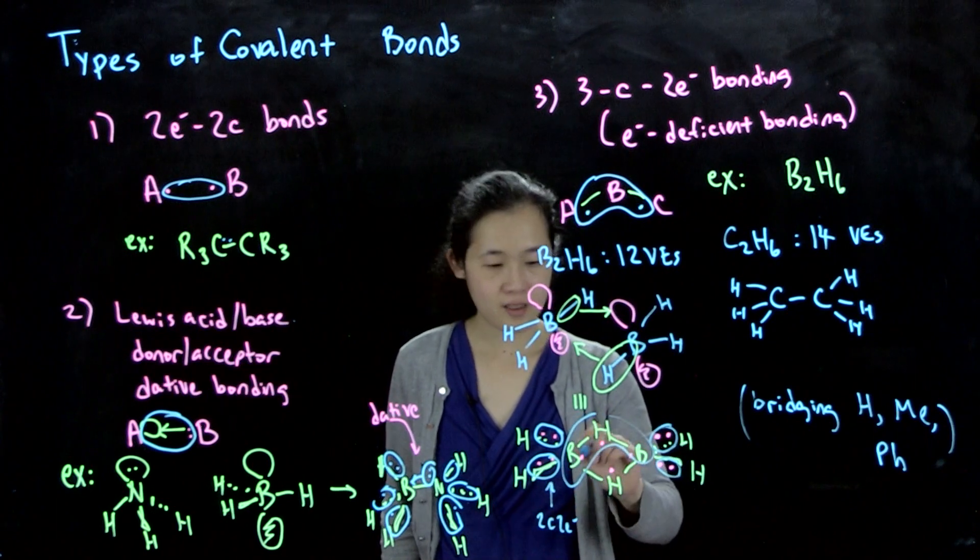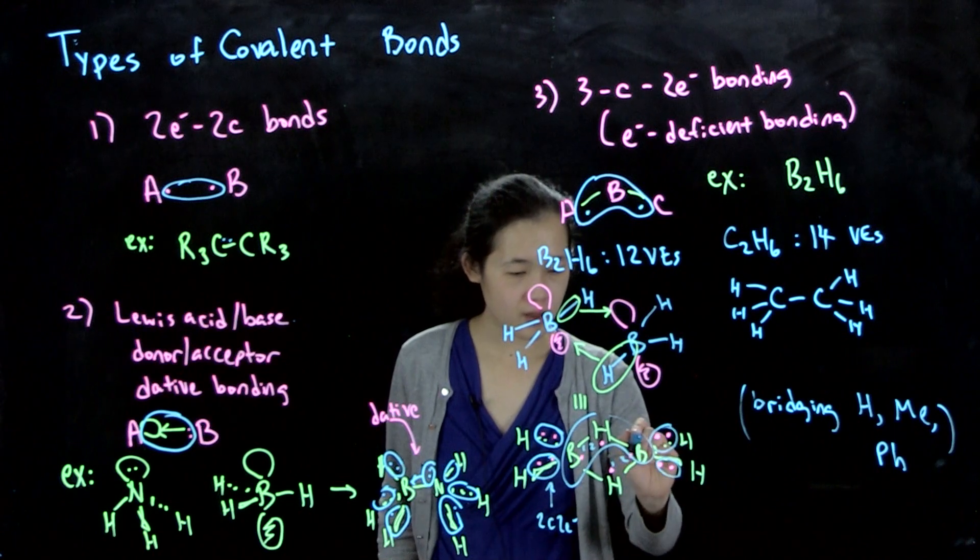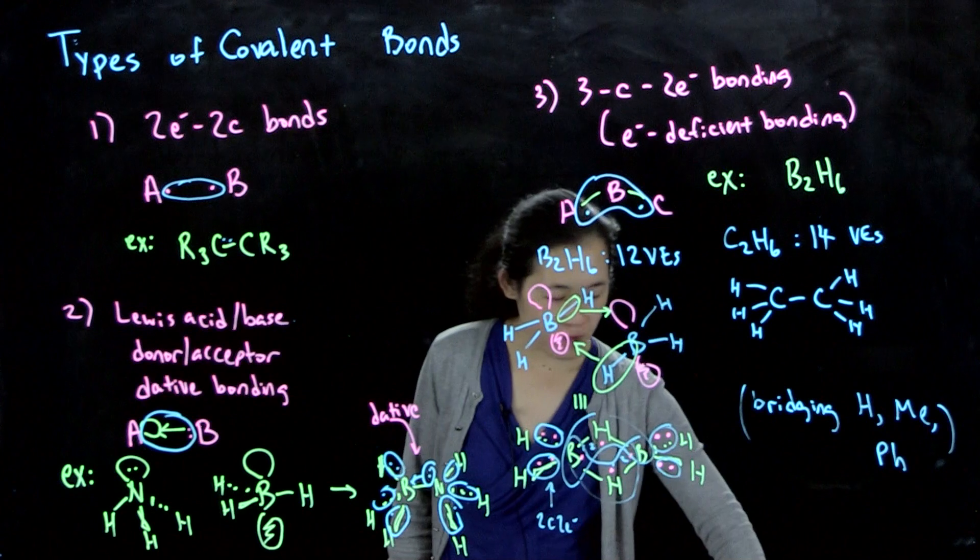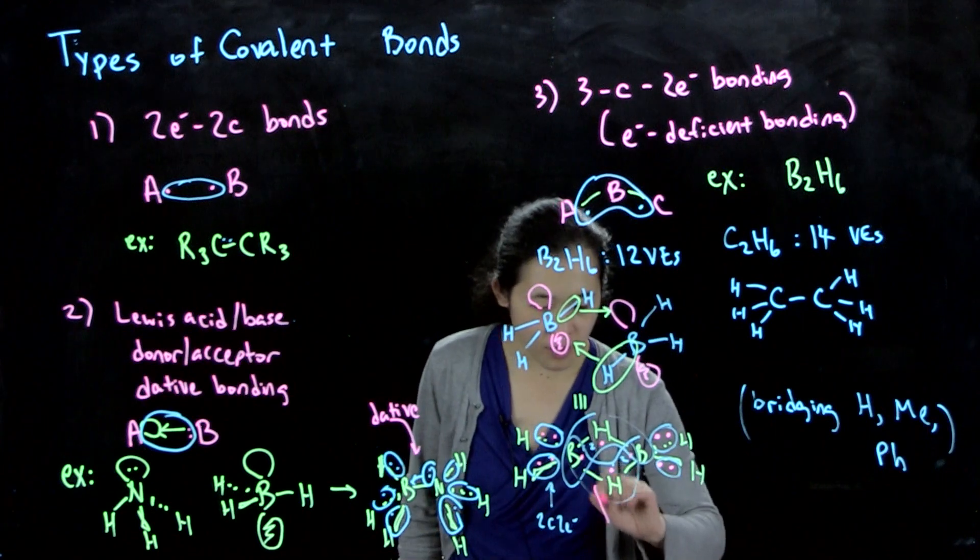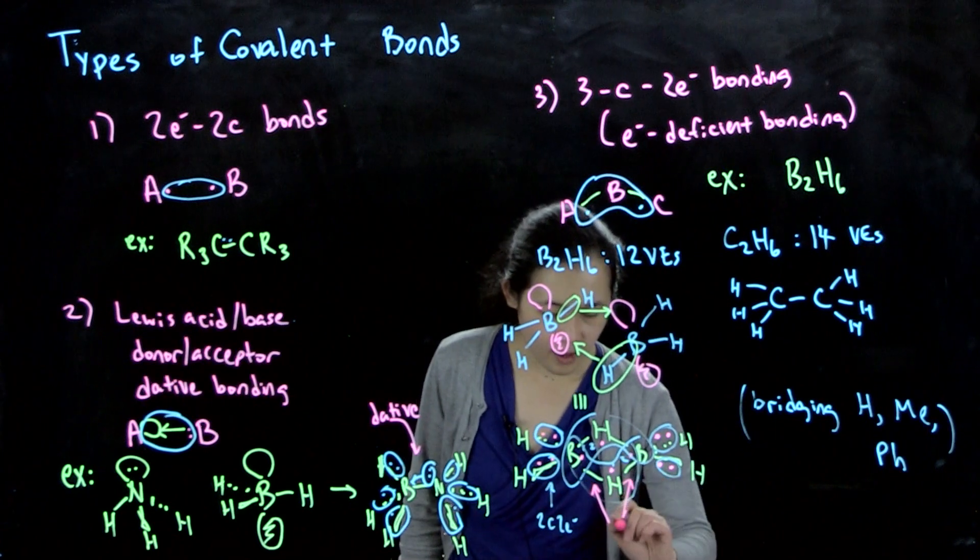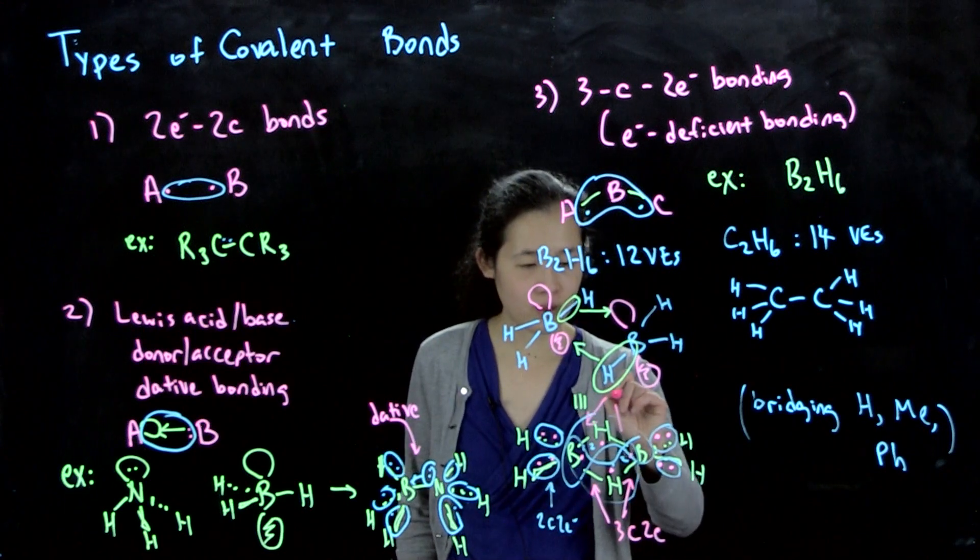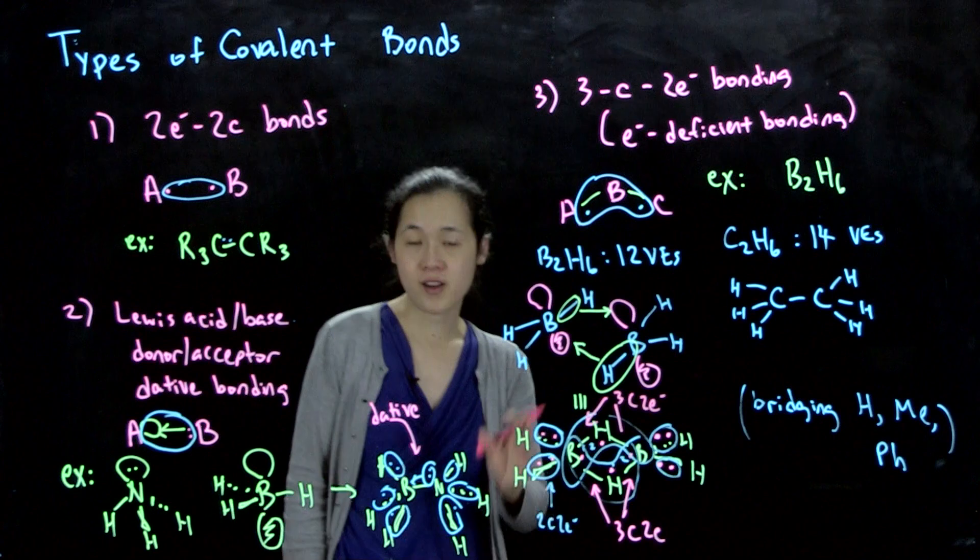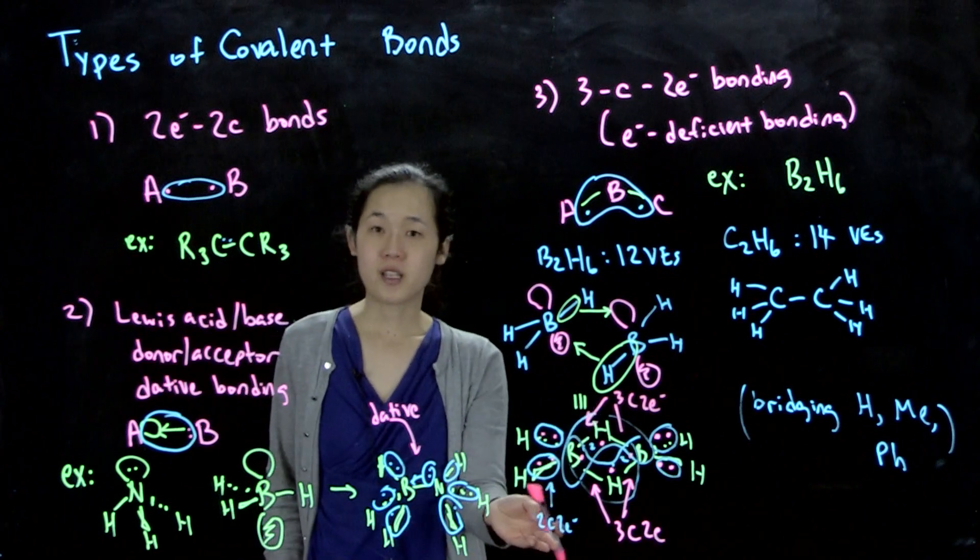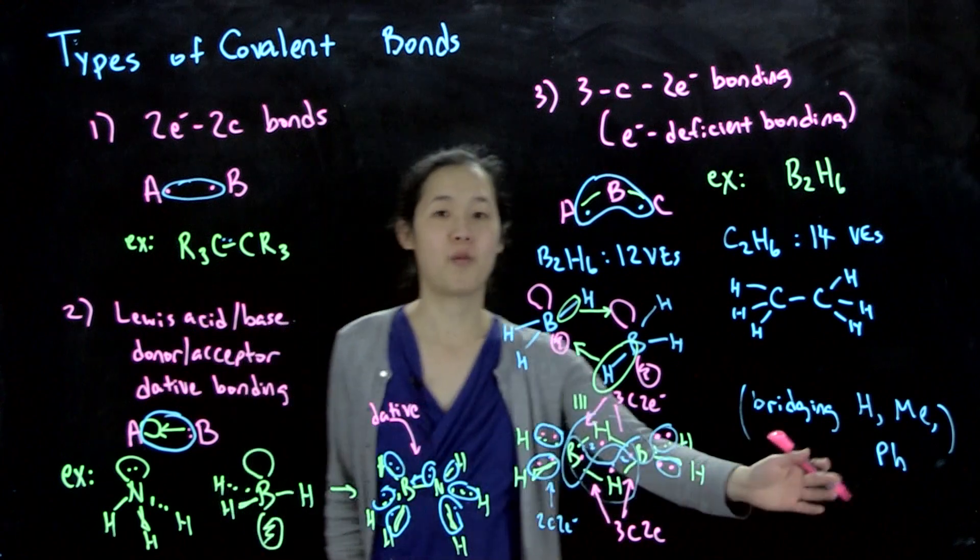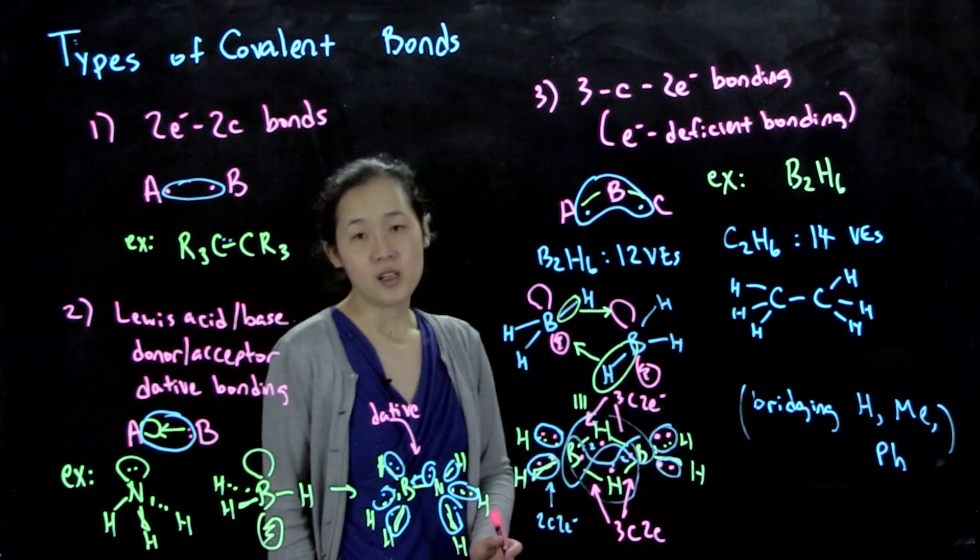We can then say that there's one three center two electron bond here. These two electrons and these two can go into this. So these two bonds are equivalent: three center two electron bonds, and both of these as well. That's how we identify different types of bonding within a molecule. You have to do some electron counting or remember the shorthand.